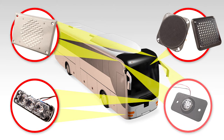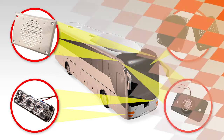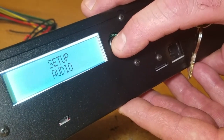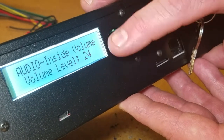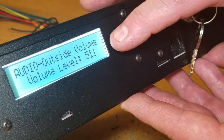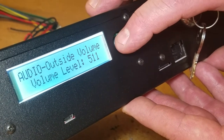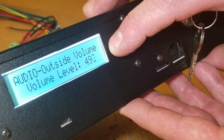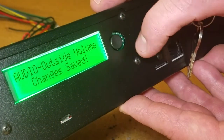The microphone installed on the outside of the bus takes samples of the ambient noise level to increase or decrease the volume of the system accordingly. The system is controlled by the electronic control unit. Settings can be adjusted using the display and navigation button, such as volume, currently selected sound files, and messages.